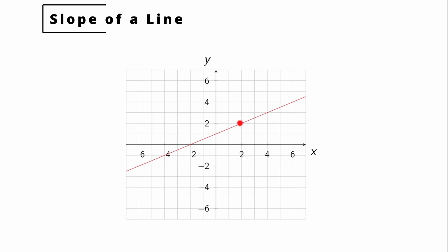It doesn't really matter where you start. If I start here, two units to the right, one unit up. Two units to the right, I go one unit up. So for every two units I travel to the right on the line, the line travels one unit up. We look at this ratio of the y change over the x change — in this case, that's one divided by two. So the slope of this line is one half.